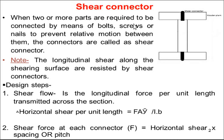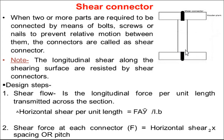When two or more parts are required to be connected by means of bolts, screws, or nails to prevent relative motion between them, the connectors are called shear connectors. There may be longitudinal or lateral shear stress. To avoid movement in the lateral direction, if you use this connector at the joint, it will not move or displace. The longitudinal shear along the shearing surface is resisted by the shear connector.